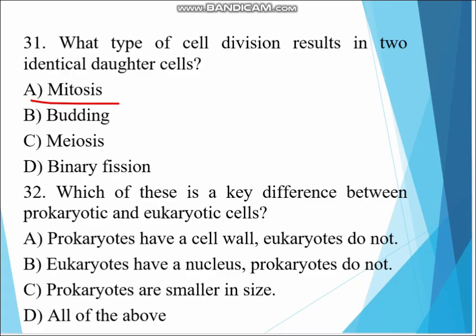Question 32. Which of those is a key difference between prokaryotic and eukaryotic cells? A. Prokaryotes have a cell, eukaryotes do not. B. Eukaryotes have a nucleus, prokaryotes do not. C. Eukaryotes are smaller in size. D. All are correct. The difference between those, D is the answer.